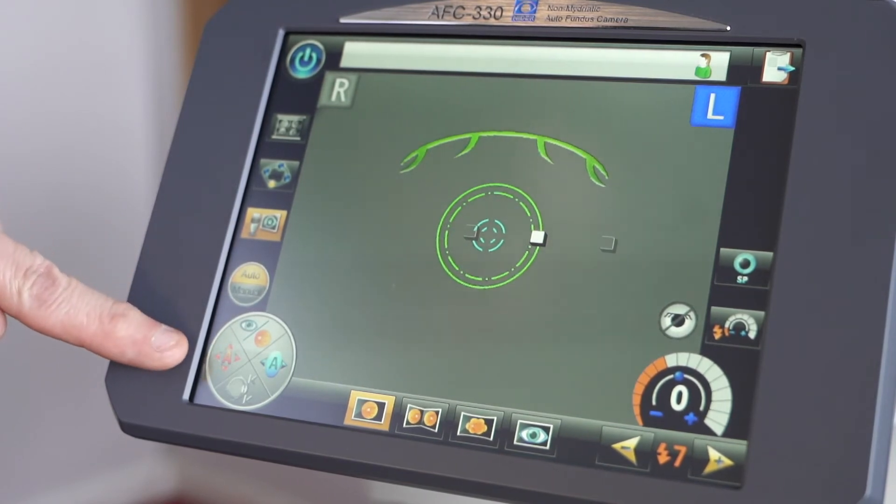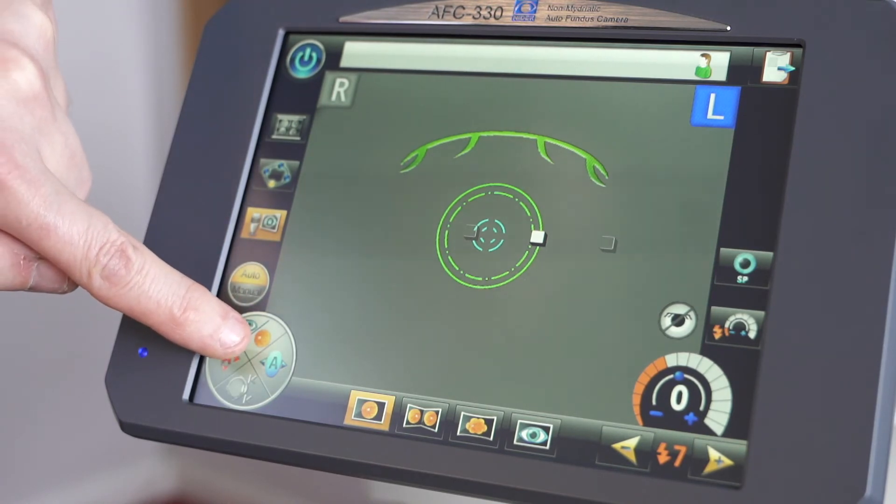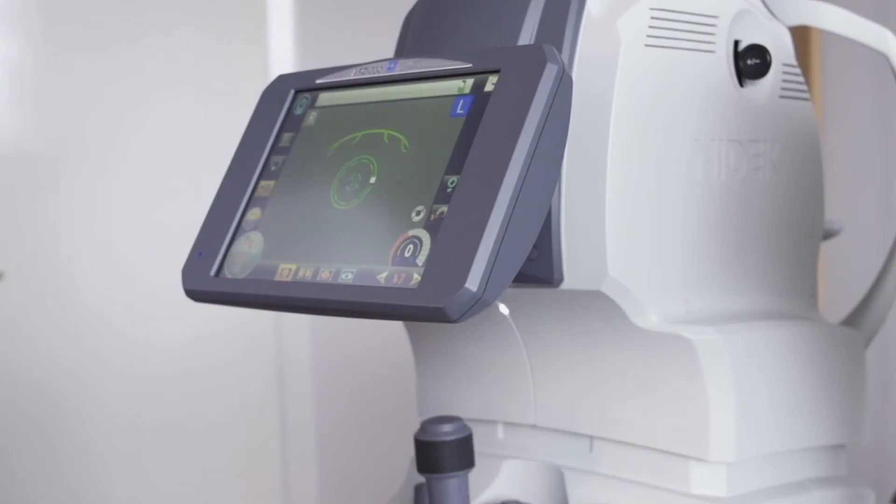Here we have a button to manually switch between auto and manual mode. And the icons down here are showing us that we have automatic tracking, automatic changing from anterior eye to fundus, automatic focus at the bottom.